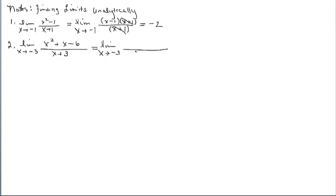Let the denominator help you factor the numerator. The objective is to cancel the x plus 3. One factor of the numerator is going to be x plus 3. Factors of negative 6 that multiply and add to positive 1 would be plus 3 and minus 2. These cancel, telling us there's a point discontinuity at x equals negative 3. Plugging in negative 3 gives us negative 5.